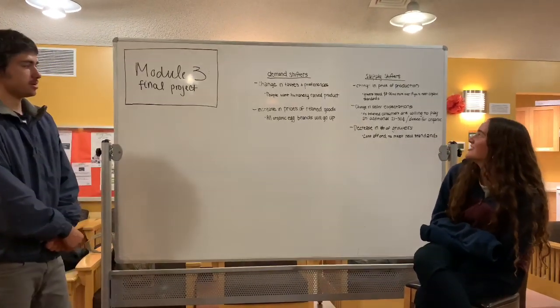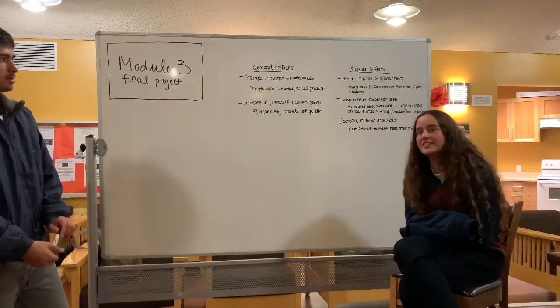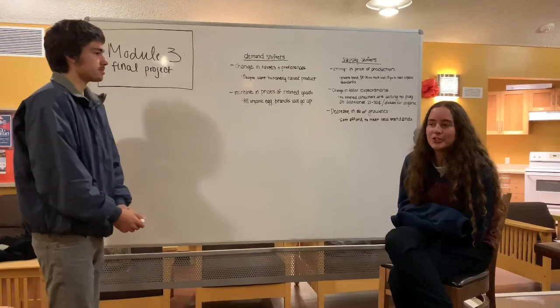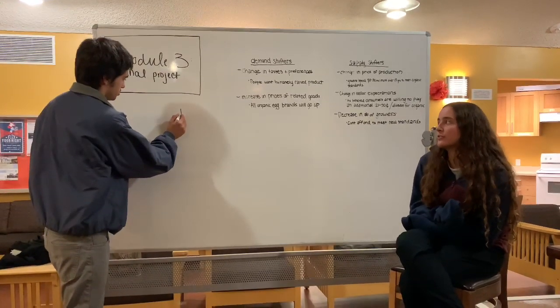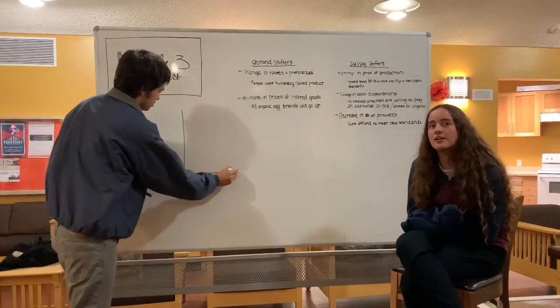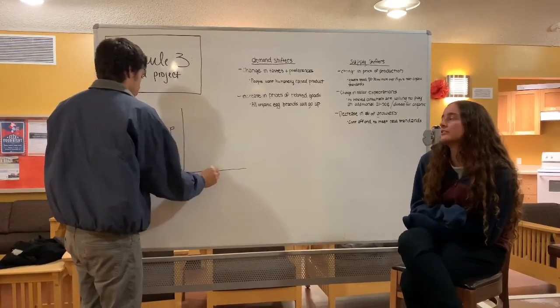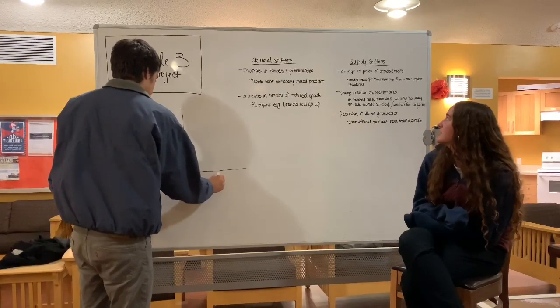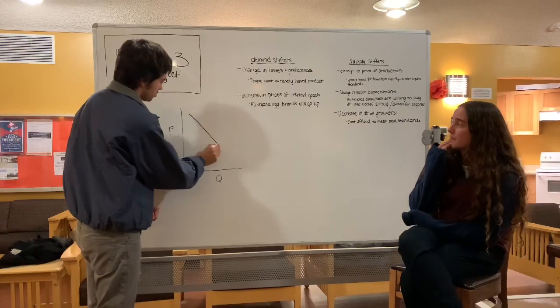So our first supply shifter is a change in the price of production. That will occur because with higher standards for the organic certification, farmers will have to spend 8 to 30 million more dollars over the next 15 years to meet the standards, and that will affect our supply and demand curve.